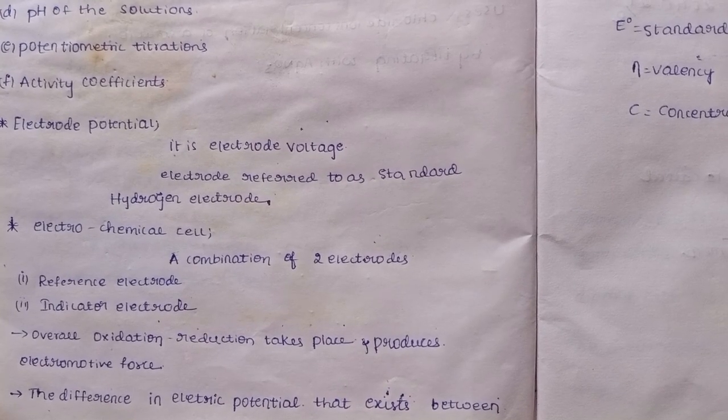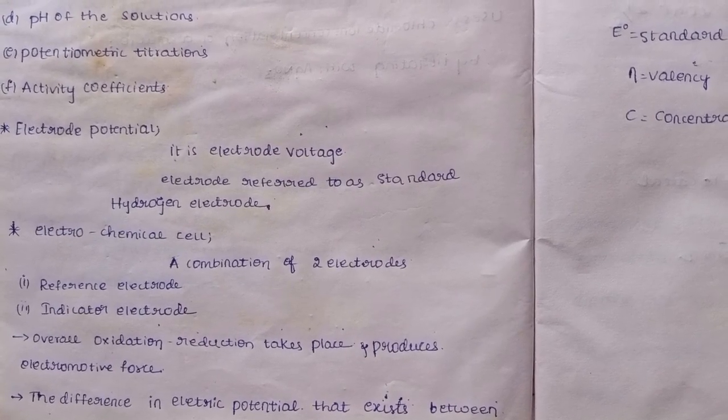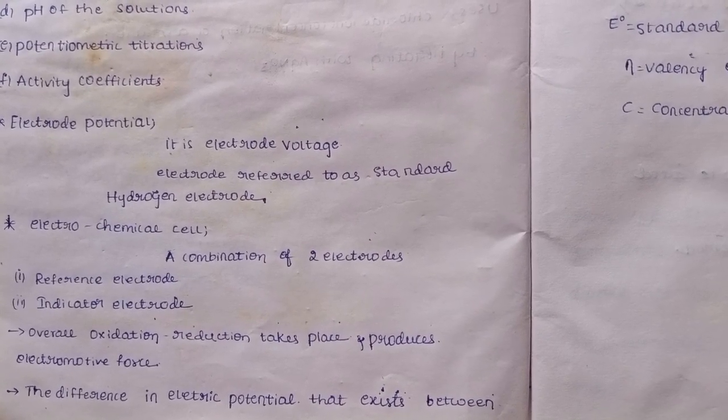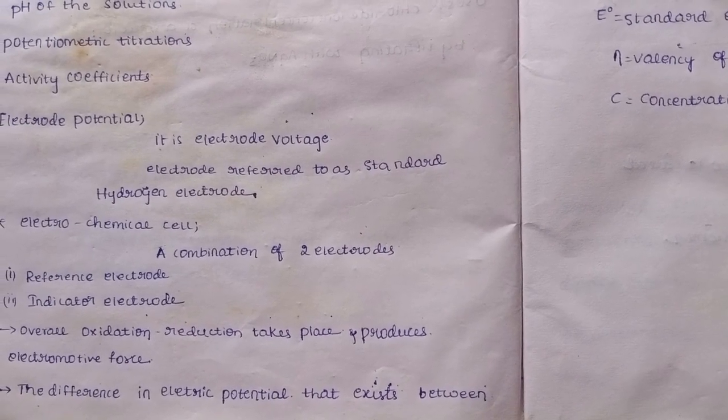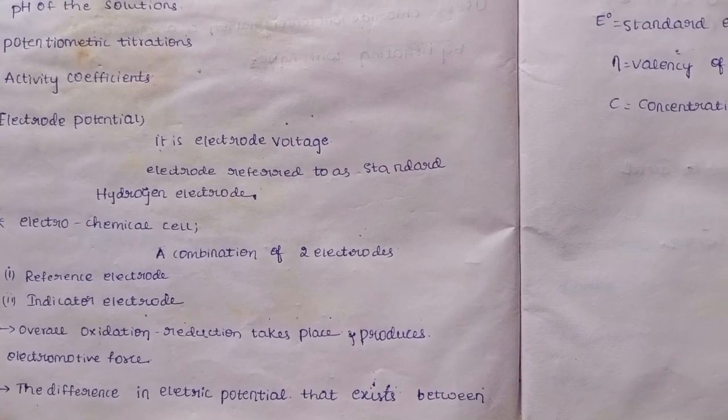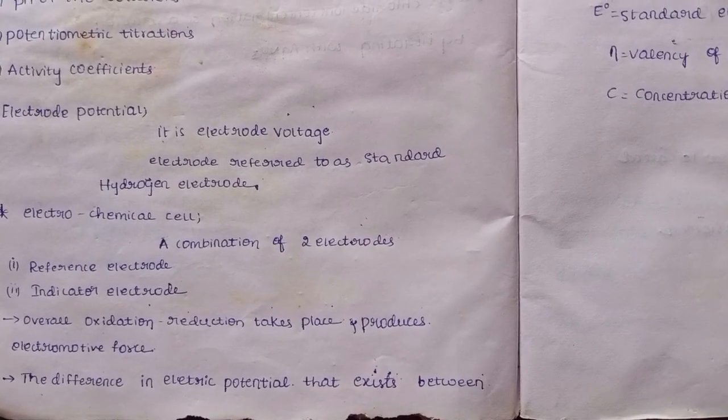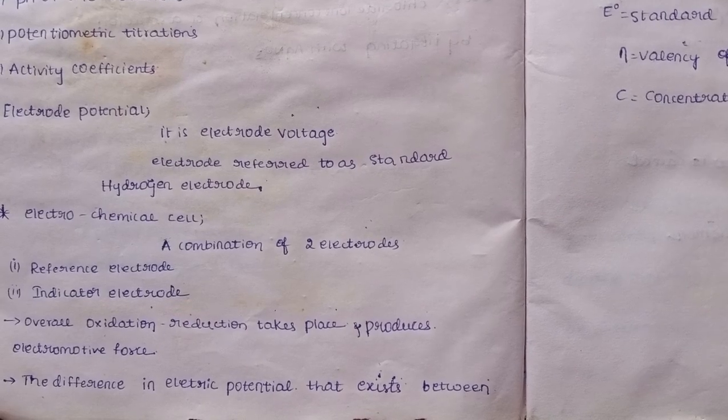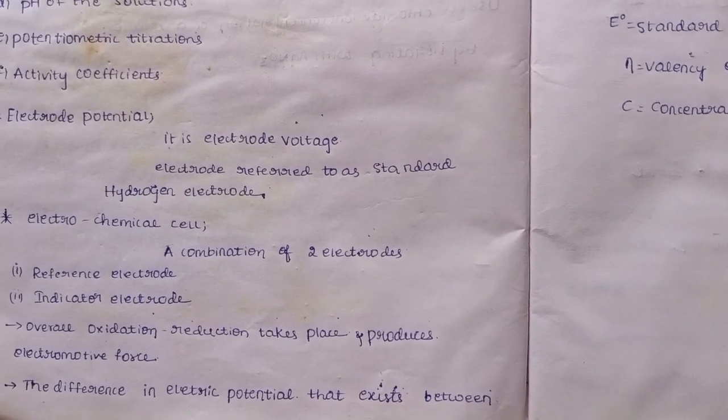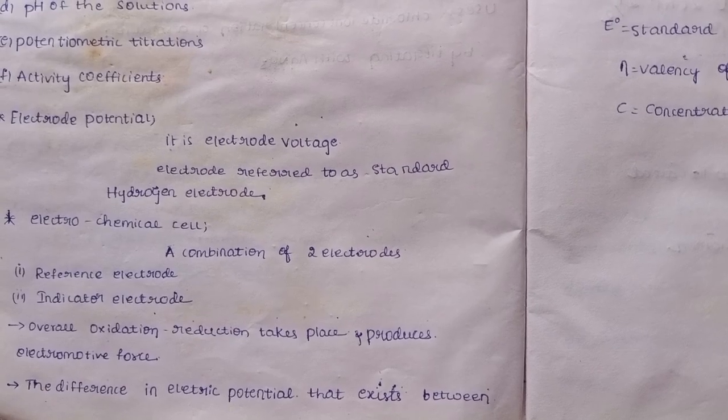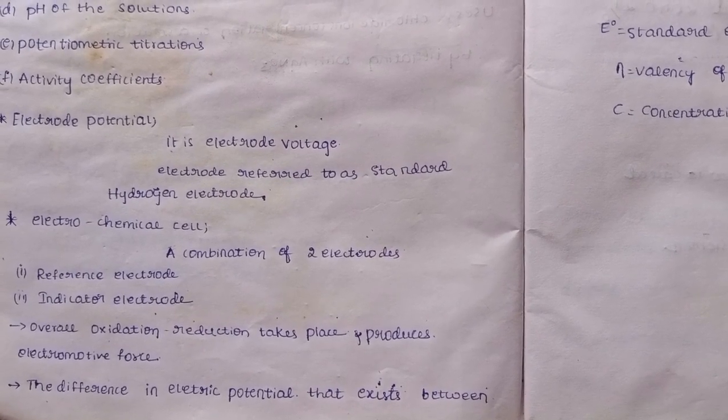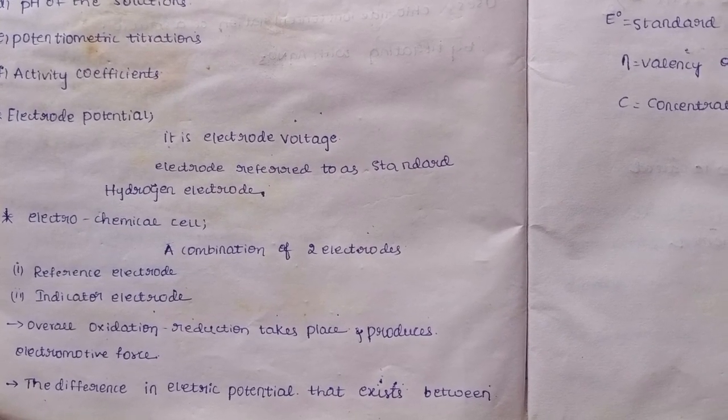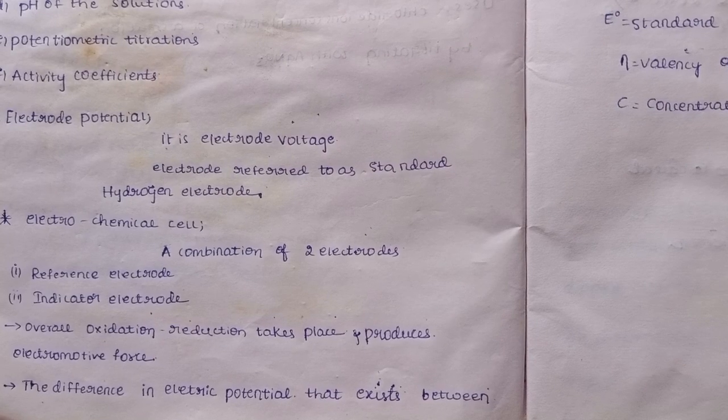The difference in electric potential that exists between two electrodes - you can use an electric potential like voltage. The electrode potential - you can have a reference electrode as well as an indicator electrode.